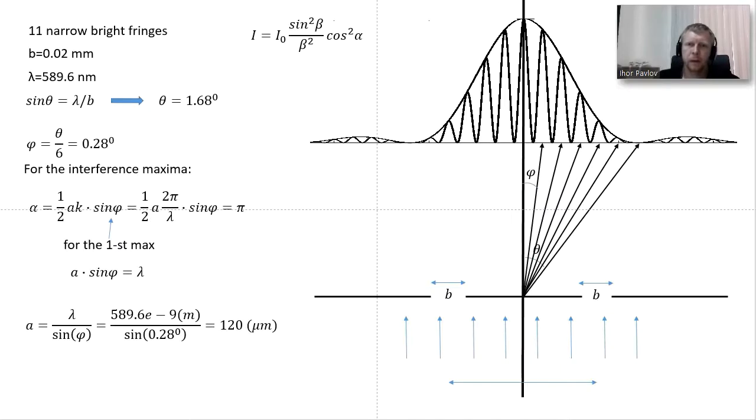From that condition which says 11 narrow bright fringes, in addition to the central maximum from both sides we have five additional maxima. If we count, one, two, three, four, five, and the sixth one vanishes as it coincides with the diffraction minimum. The phi angle, which corresponds to the angular distance between consecutive maxima, is the same throughout.